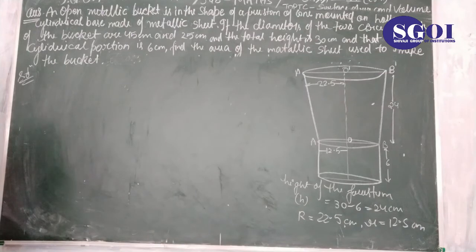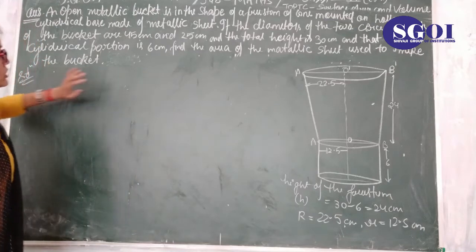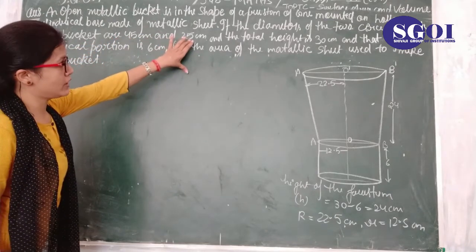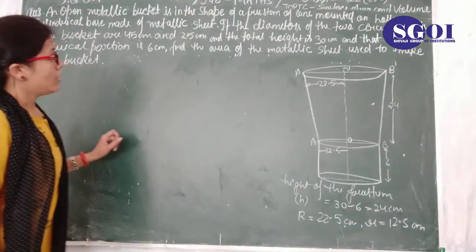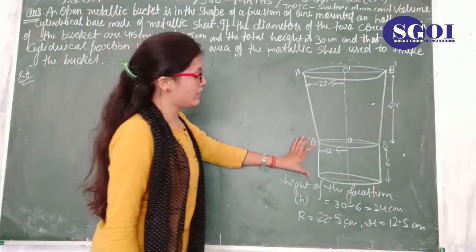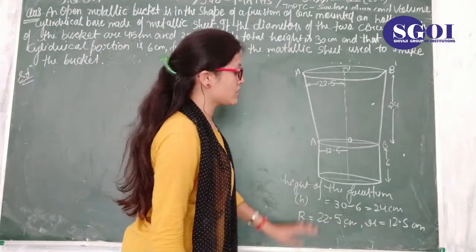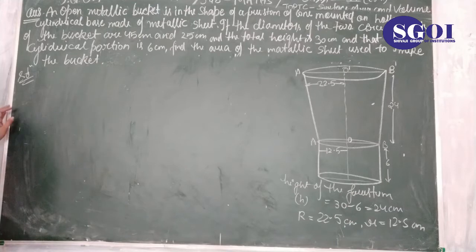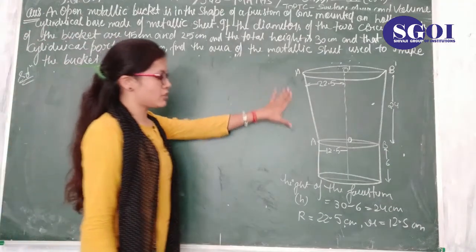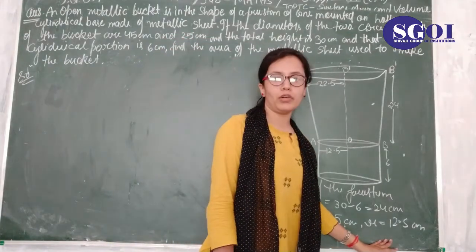The next question is: an open metallic bucket is in the shape of a frustum of a cone mounted on a hollow vertical cylinder made of metallic sheet. The diameters of the two ends are 45 cm and 25 cm. The total height is 30 cm and the height of the cylindrical portion is 6 cm. So the height of the frustum is 30 - 6 = 24 cm. Capital R = 22.5 cm and small r = 12.5 cm. Find the area of metallic sheet used to make the bucket.